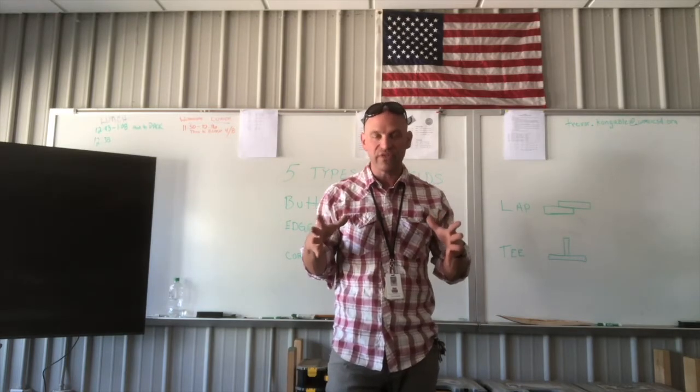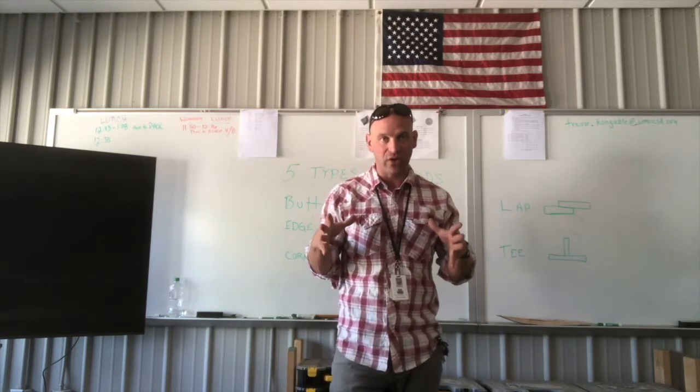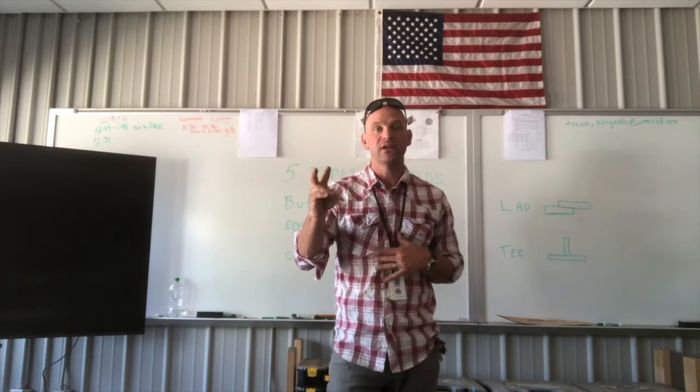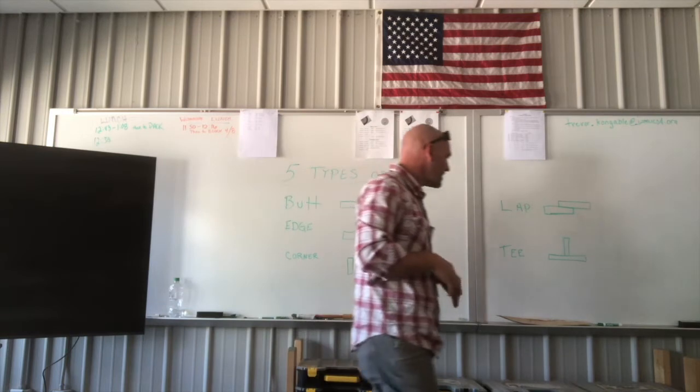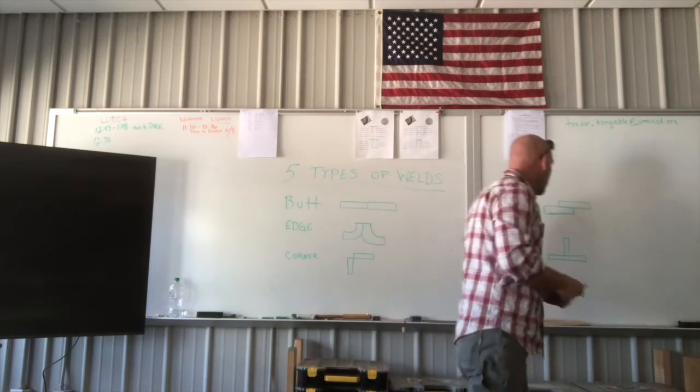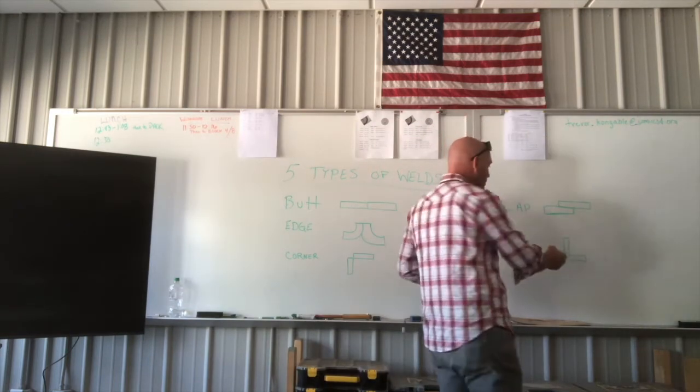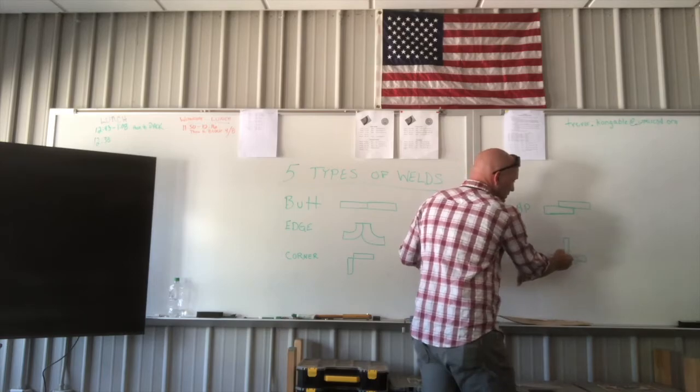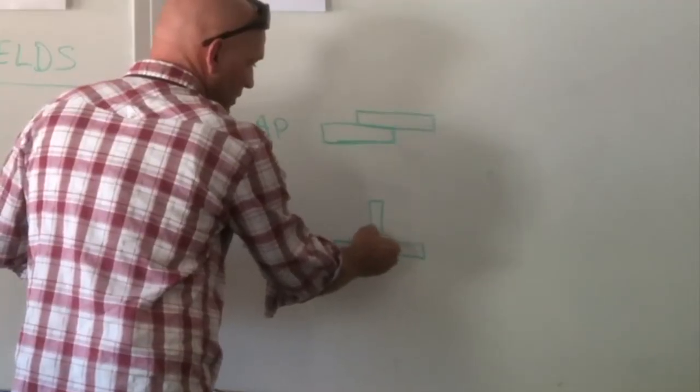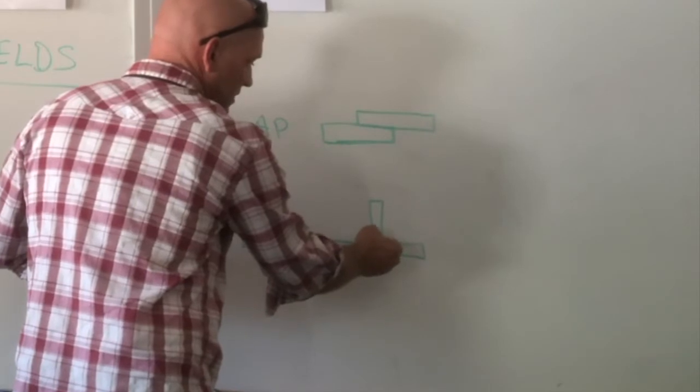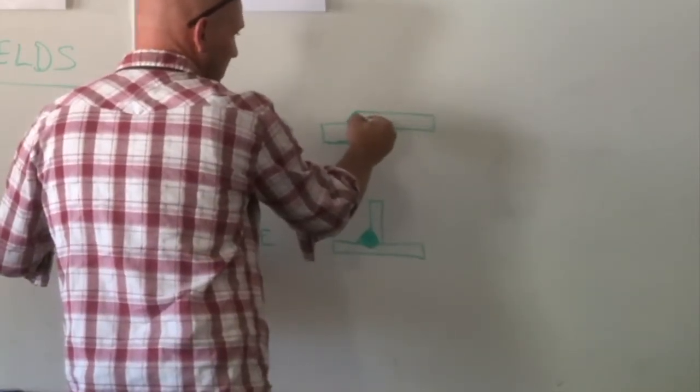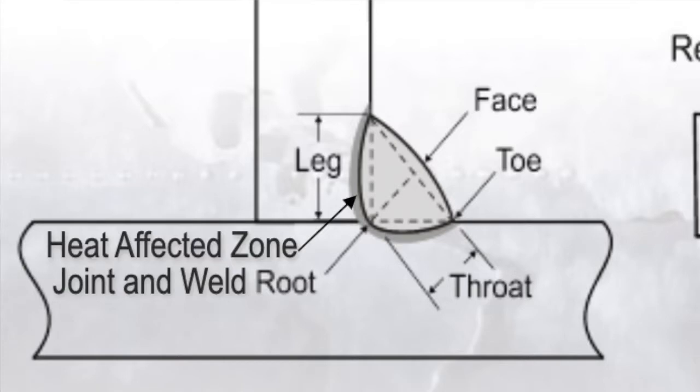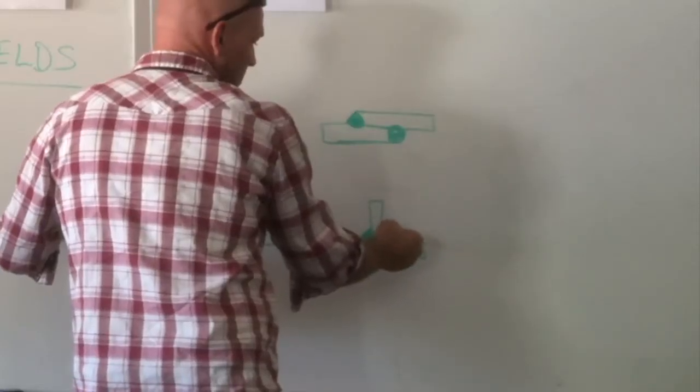So with these different types of welds, we have essentially two different things we call these welds. So on a T and a lap, when we would weld right in here, we deposit the weld and we get penetration down there into both pieces. That is a fillet weld. This is called a fillet weld, and we are welding these areas.